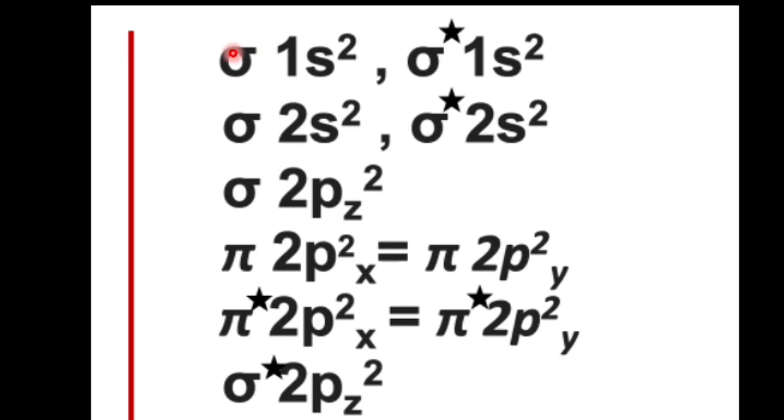Here you can see a table which shows the filling of molecular orbitals based on their increasing energy level. It means after filling sigma 1s bonding molecular orbitals, then only electron can enter into sigma star 1s orbital, then sigma 2s, then sigma star 2s orbital.